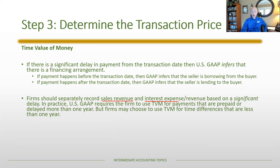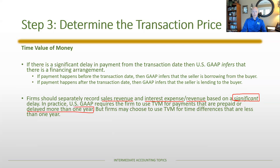When there is a significant delay, there will be sales revenue at the time of sale, plus interest expense if there's an inferred borrowing arrangement, or interest revenue if there's an inferred lending arrangement. In practice, 'significant' means material — under GAAP the threshold is about one year. If the sale and payment differ by more than one year, time value of money must be applied. Companies can apply TVM for shorter periods too, but beyond one year there's no judgment — it's required.